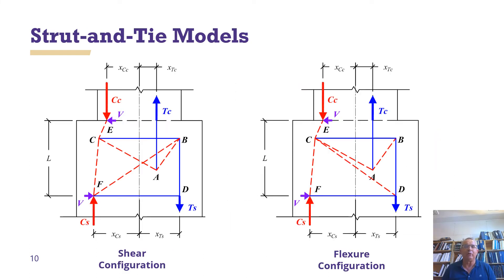Now, one way to model that are so-called strut and tie models. And those models have blue lines, which would be the reinforcement. Those are only in tension. And the dotted red lines are essentially one way to represent the compressive forces in the concrete. And there's two configurations, a shear configuration and a flexure configuration. But these models allow us to predict which columns will fail and which will not.